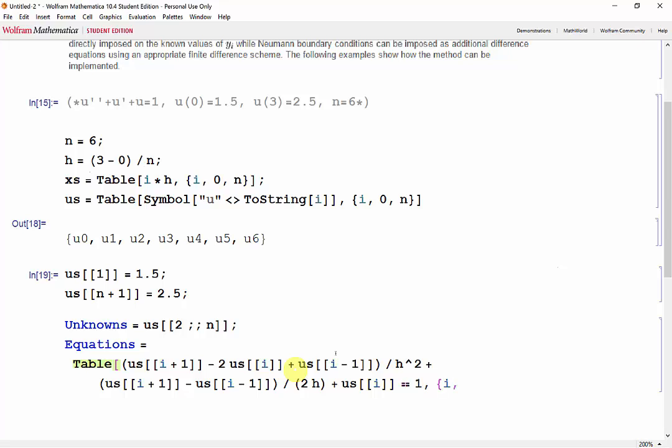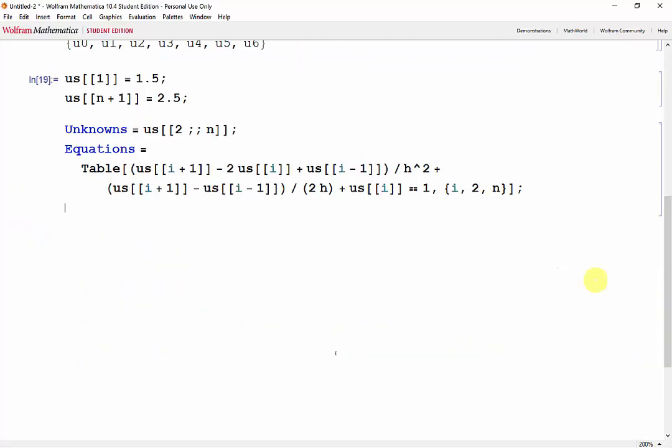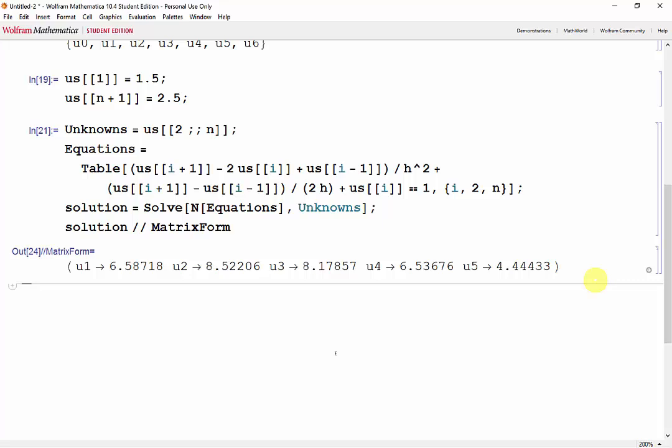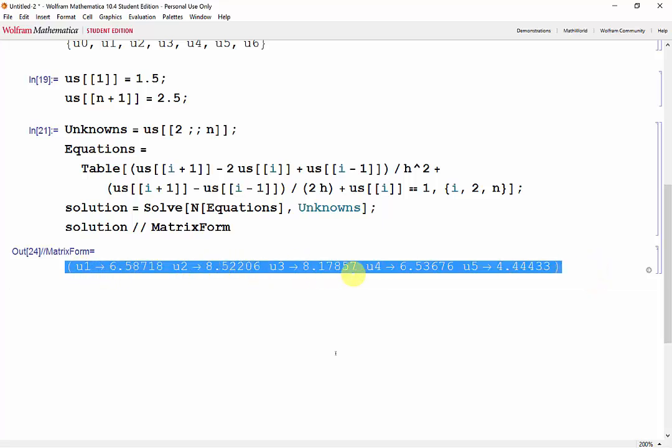Then i will start from u1, which is u s of 2, and i goes all the way to u s of n, which is u5. And now we can use the solve function to solve our system of equations. We'll call our answers the solutions using the solve function. We'll use the numeric function to make sure that our answer is in decimal form as well. And we're solving the list of equations with respect to the unknowns. And we'll put our solution straight into matrix form. And here are the solutions for u1 all the way to u5.